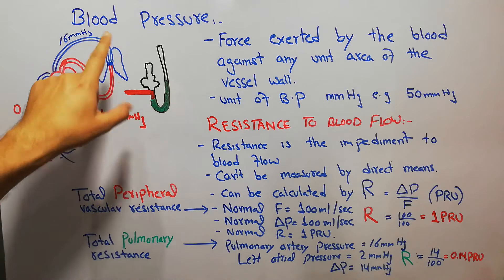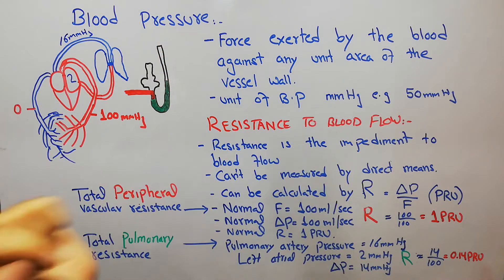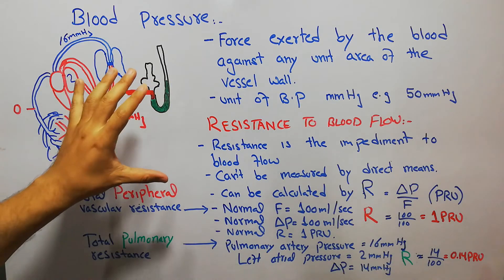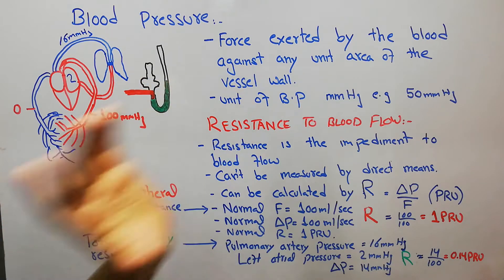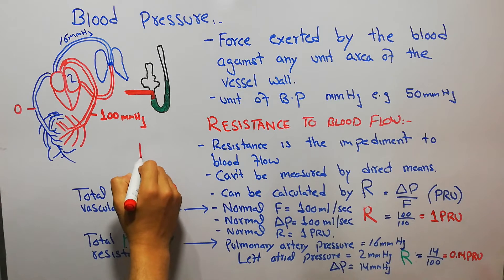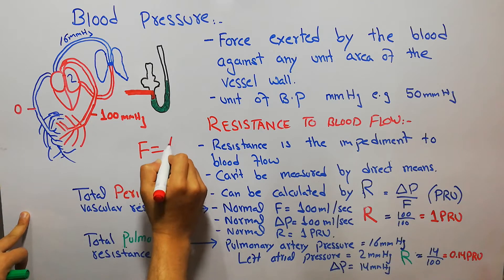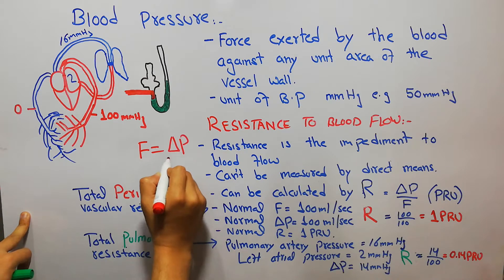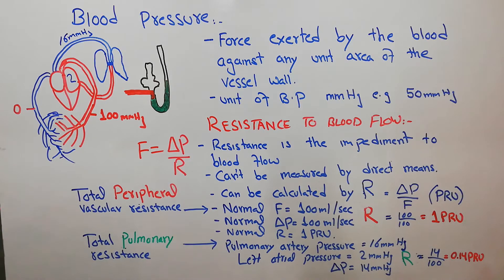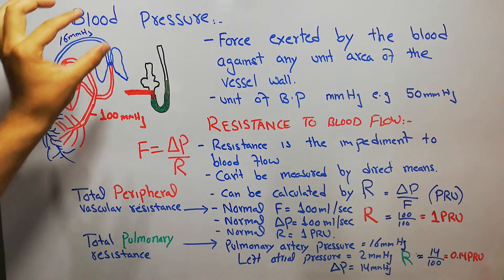Today we are going to discuss blood pressure and resistance to blood flow. Previously we discussed blood flow and how it can be calculated with Ohm's law: flow is equal to pressure difference divided by resistance.